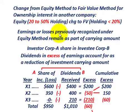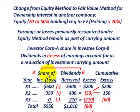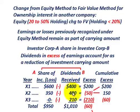Any earnings or losses previously recognized under the equity method remain as part of the carrying amount. When you have an ownership interest in another company, Corporation A is going to share in the income and losses of Corporation B. They're also going to get some dividends received from Corporation B — that is, Corporation A is going to receive some dividends from Corporation B.